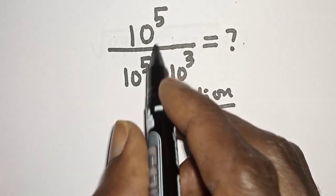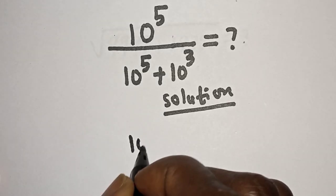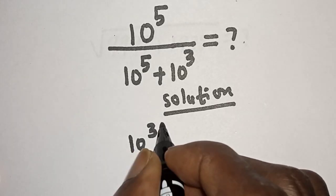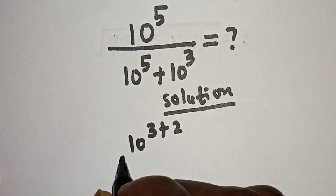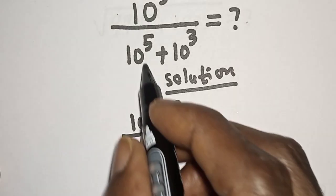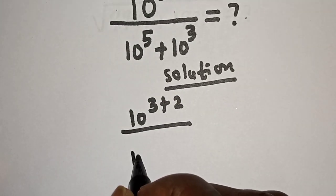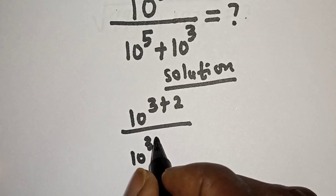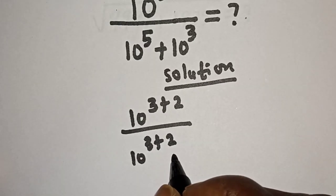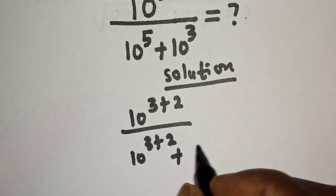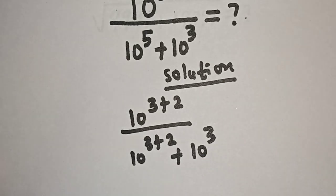10 to the power 5 can be written as 10 raised to power 3 plus 2, divided by 10 to the power 5 written as 10 raised to power 3 plus 2, plus 10 raised to power 3.